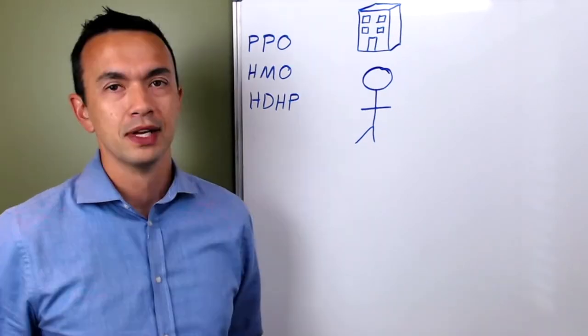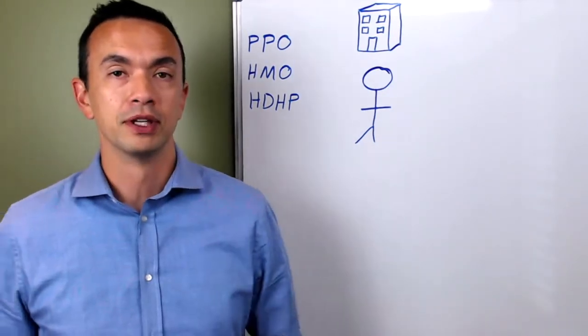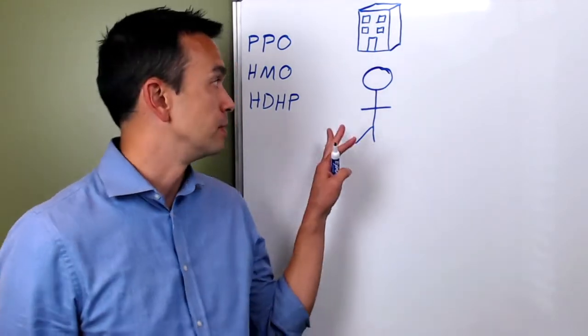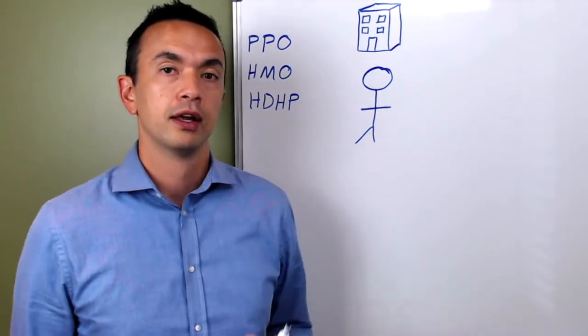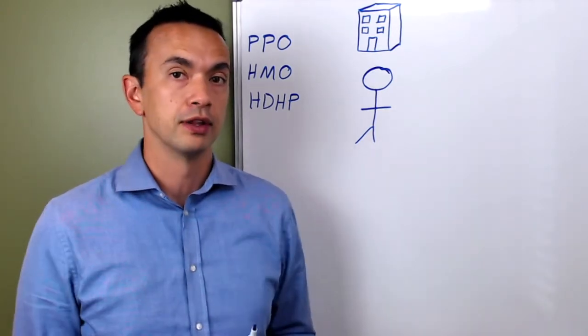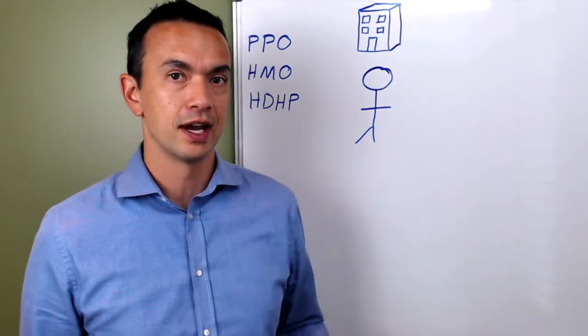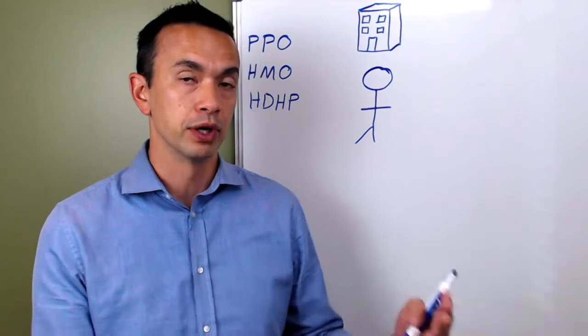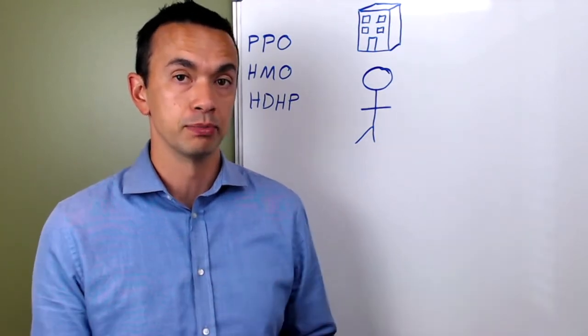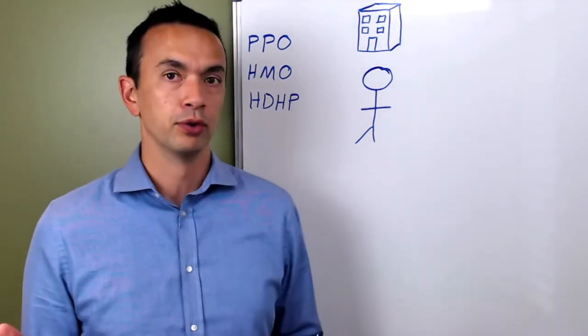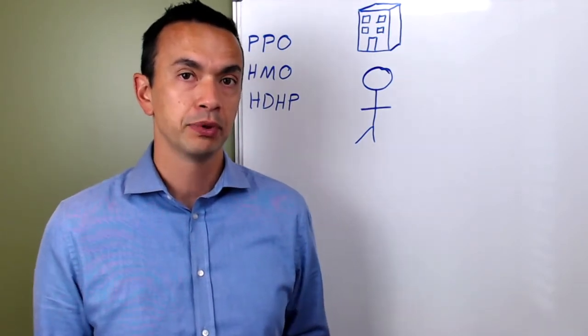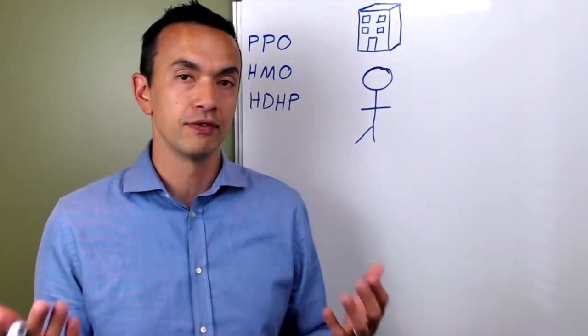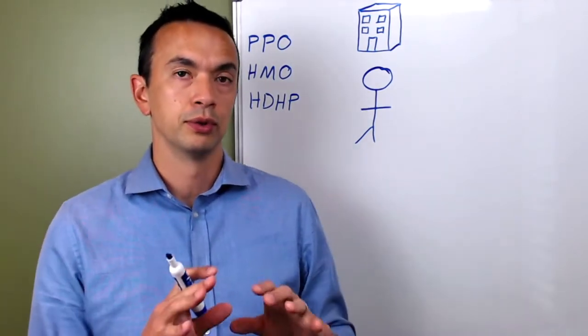Finally, with the high deductible health plan, this one's a relatively new option where the premium is generally the lowest. But on the other side of it, like the name says, it has a high deductible. Before you meet that deductible, whenever you have medical bills, you are just paying those medical bills. So in order to make that make sense for people, they also established something called the health savings account. In order to have a health savings account...